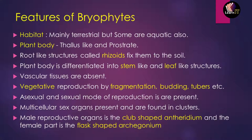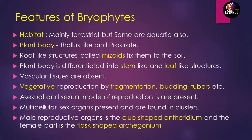The plant body is differentiated into stem-like and leaf-like structures, but the differentiation is not well developed. Vascular tissues are absent, consistent with the definition of bryophytes as the simplest non-vascular land plants with undifferentiated body parts.